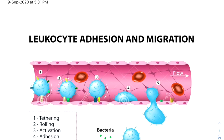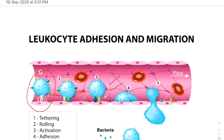The principal aim of leukocyte migration is eliminating the primary inflammatory trigger and contributing to tissue repair. To get leukocytes to the site of injury or infection, an elaborate series of adhesion events occur between the leukocytes and the endothelium, ensuring that leukocytes leave the bloodstream only at the inflammatory site. This series of sequential steps is termed the leukocyte adhesion cascade.